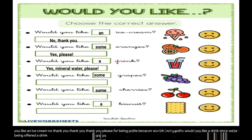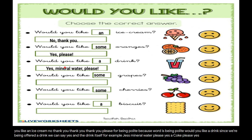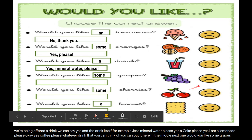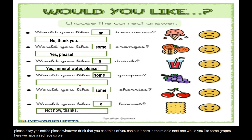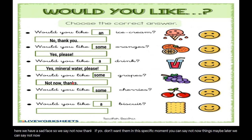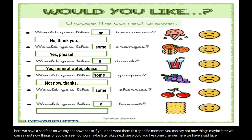'Would you like a drink?' — happy face — you can say 'yes' and name the drink: 'Yes, mineral water please,' 'Yes, a Coke please,' 'Yes, a lemonade please,' 'Yes, coffee please' — whatever drink you can think of. 'Would you like some grapes?' — sad face — you can say: 'Not now, thanks' or 'Not now, maybe later.'